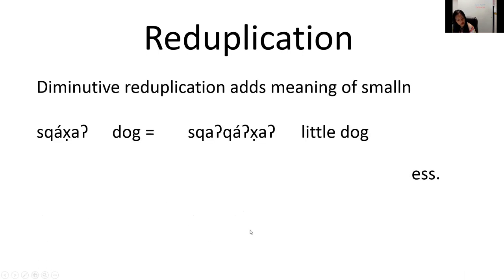The next topic is reduplication. When part of a word is copied to add meaning, it is called reduplication. There are several different kinds in Klallam. One common type is called diminutive reduplication — it adds the meaning of smallness. Applied to 'skaha' for dog, you get 'skaha' meaning little dog. This pattern includes a glottal infix after an A. The word for 'smiling' also has a diminutive reduplication.